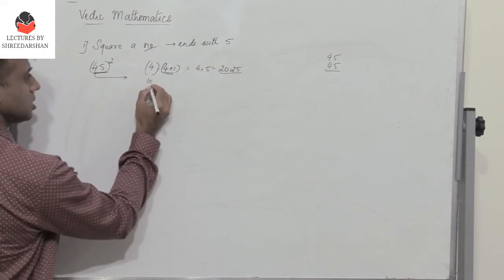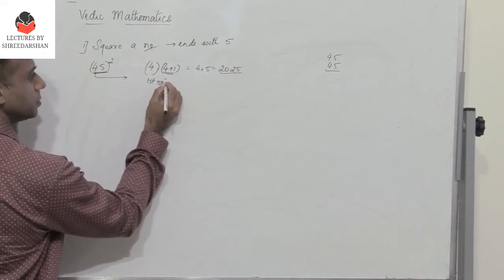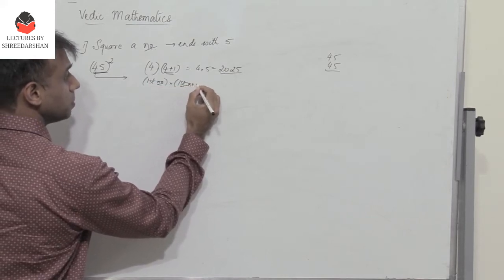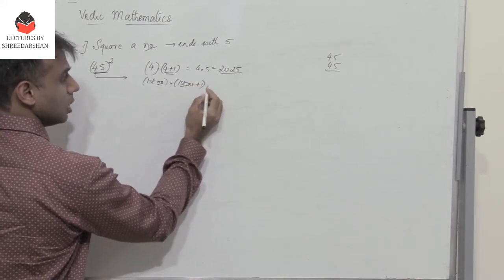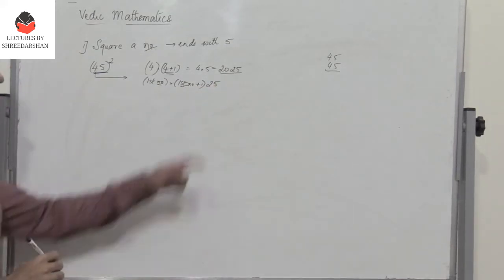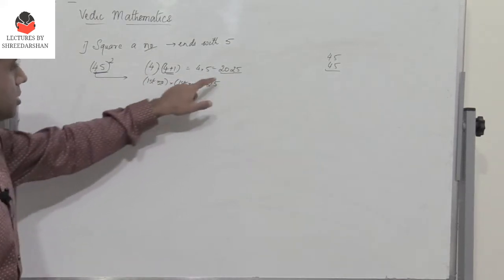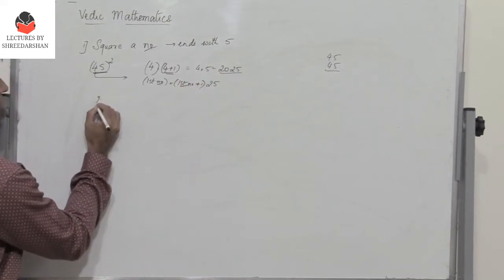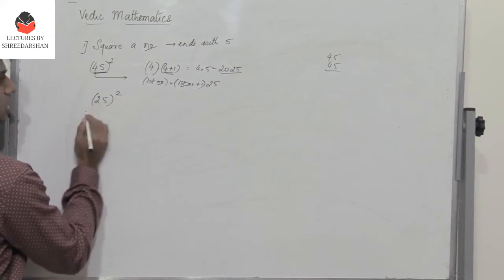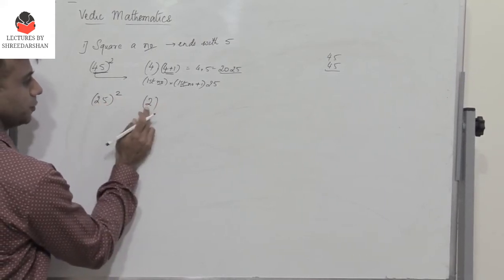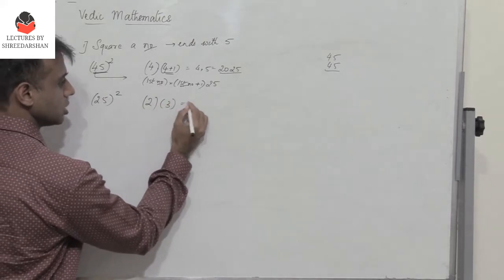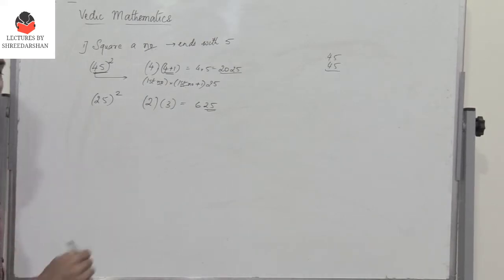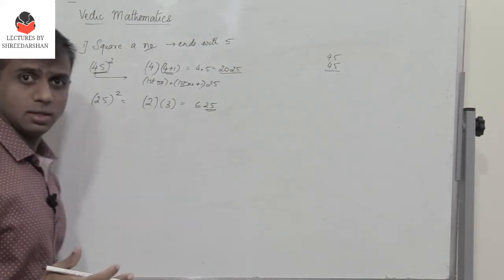So what is the procedure? Take the first number, multiply it with the first number plus 1, then put 25 at the end and you get the answer. So 45 squared is 2025. Let's take another example: 25 squared. Take the first number 2, multiply it with 2 plus 1 which is 3, giving 6, then attach 25. So 625 is 25 squared. How easy is that!